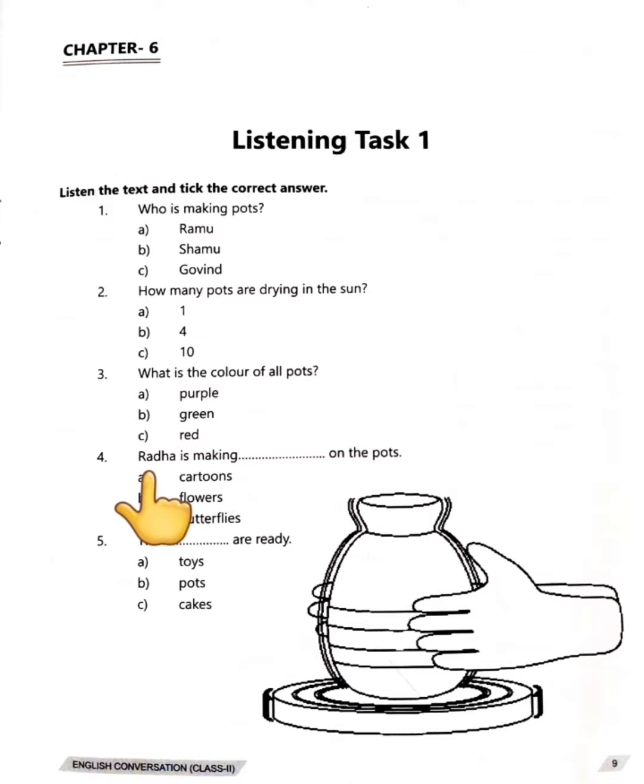Fourth question is, Radha is making dash on the pots. Option A, cartoons. Option B, flowers. Option C, butterflies. Radha ki bana rahi pots te?